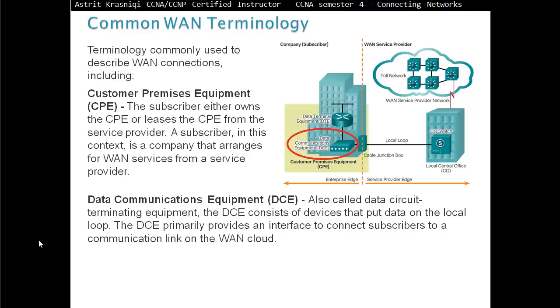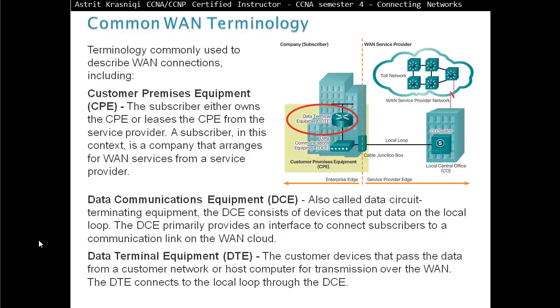Data Communication Equipment, also called Data Circuit Terminating Equipment, the DCE consists of devices that put the data on the local loop. The DCE primarily provides an interface to connect subscribers to communication links on the WAN cloud. DTE, Data Terminal Equipment, is the customer device that passes the data from the customer network or host computer for transmission over the Wide Area Network. The DTE connects to the local loop through the DCE.